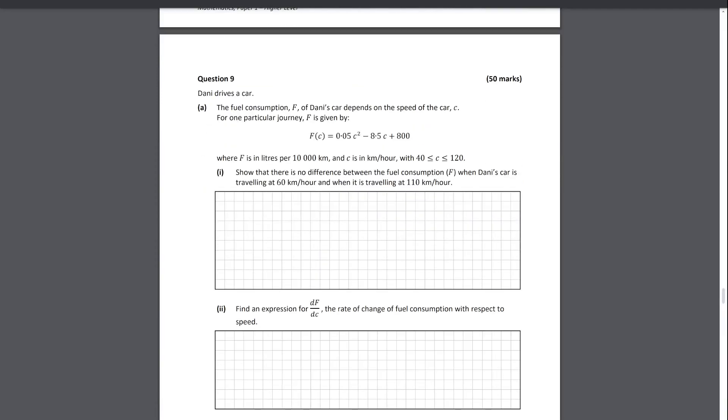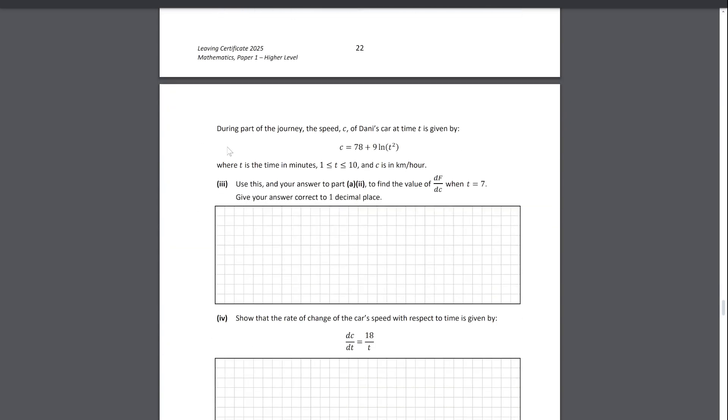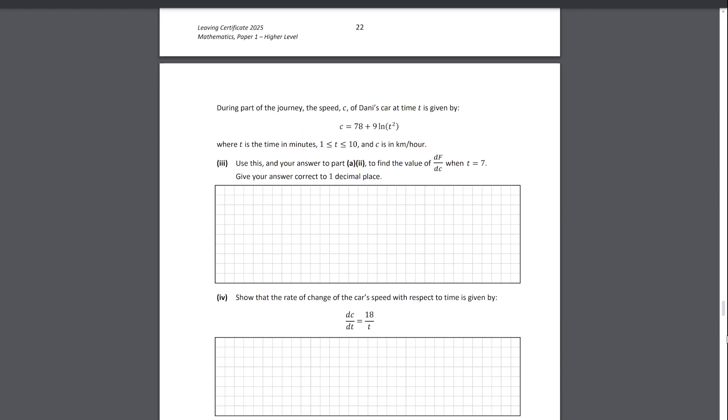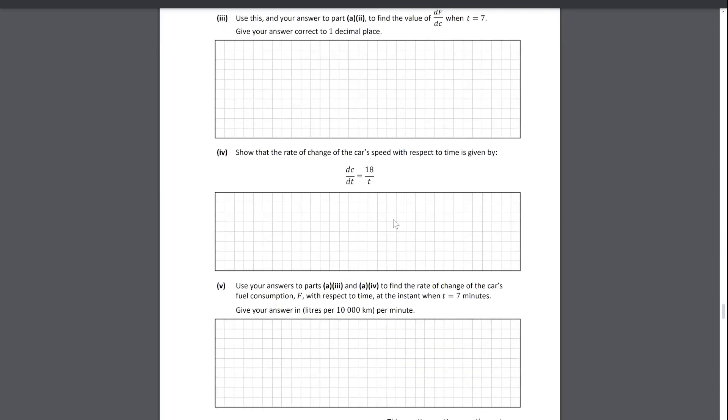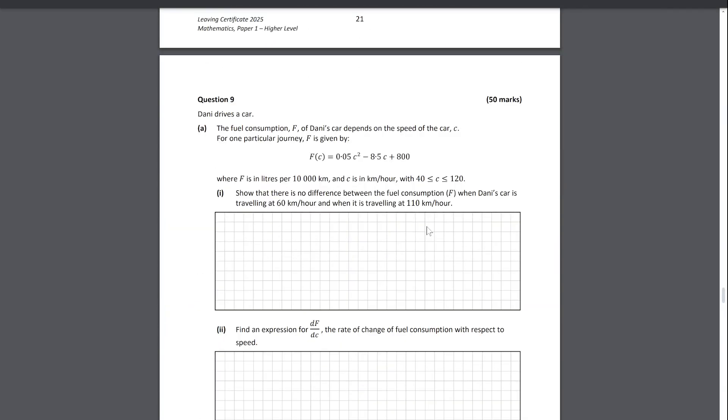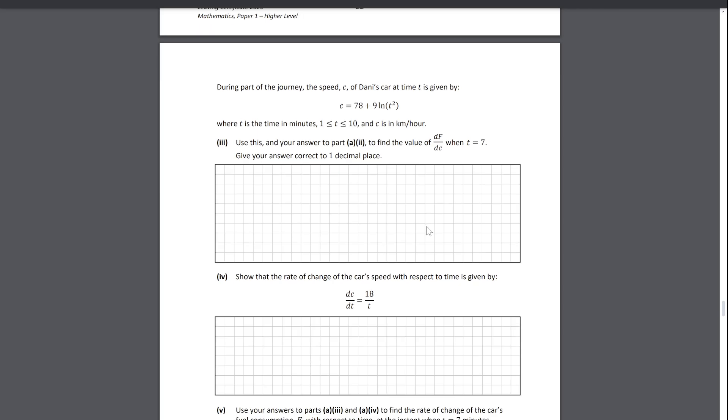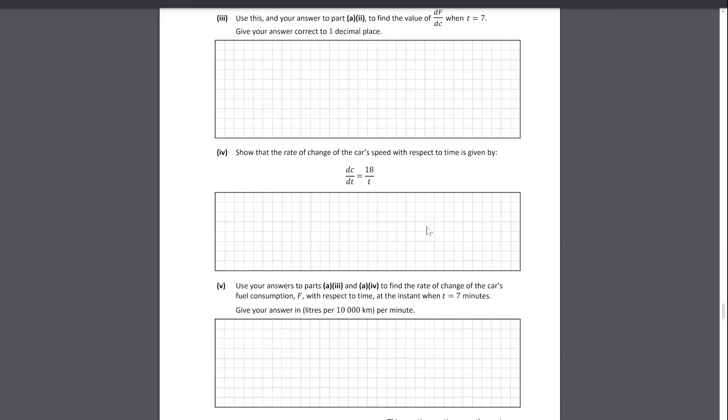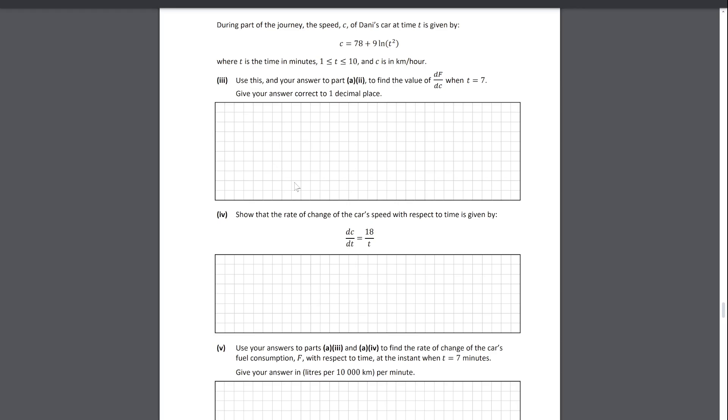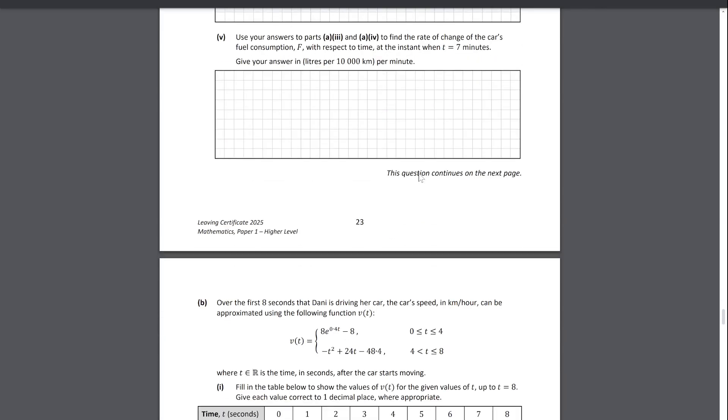Question nine: fuel consumption function, find a derivative. That's good. Part of the journey speed is dash. Find df/dc when t is seven. Then the rate of change dc/dt here - you just effectively use the related rates because you have a df/dc and you're looking for a dc/dt, so you're going to find something else.